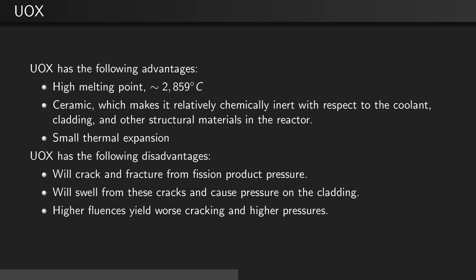UO₂ has the following disadvantages: it will crack and fracture from fission product pressure, it will swell from these cracks and cause pressure on the cladding, and higher fluences will yield worse cracking and higher pressures.